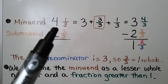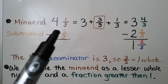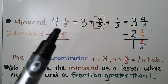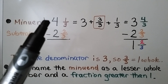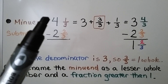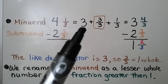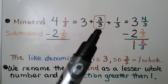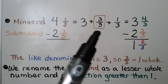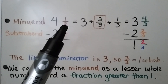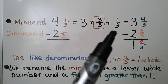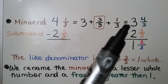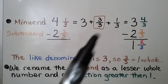This numerator is a 1 and this one's a 2. We can't do 1 minus 2 without renaming this mixed number. The 4 is equal to a 3 plus three-thirds. Here's our one-third fraction. We can rename it as 3 and four-thirds.